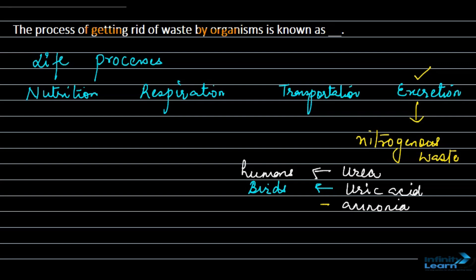And in insects, ammonia is the main excretory product. So excretion is basically the removal of nitrogenous waste from the body. In this question, the process of getting rid of waste by organisms is known as excretion. Therefore, the correct answer is excretion. I hope you understood the explanation, thank you.